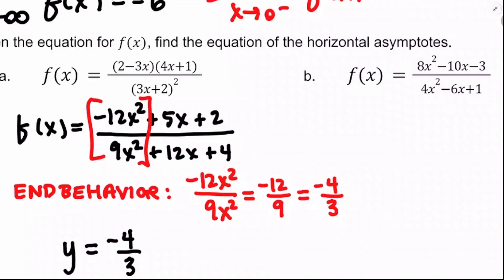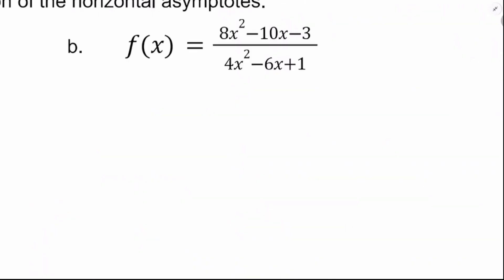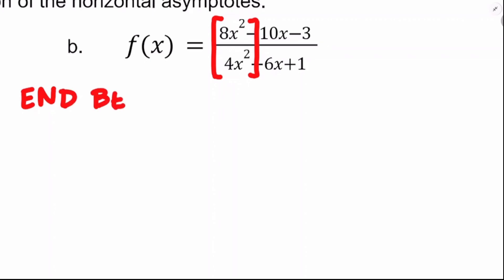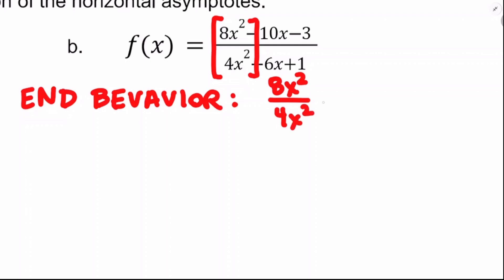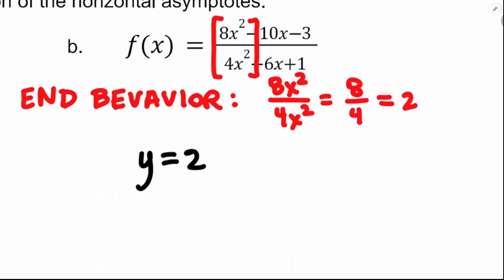That's valid because of the limit analysis as x approaches infinity. For the next one, it's already multiplied out. Sometimes it's beneficial to have something factored, and sometimes in standard form — if you're looking for end behavior, it's good to have it multiplied out. We look at 8x squared divided by 4x squared, which equals 8 over 4, which is 2. So the horizontal asymptote is y equals 2. Just grab the highest power term in numerator and denominator and divide them.